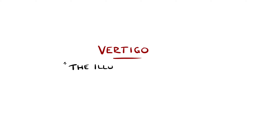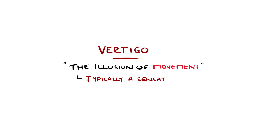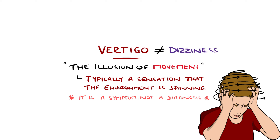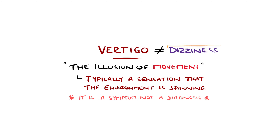Vertigo is defined as the illusion of movement, often described as a sensation that the environment is spinning or of being on a boat. There are several different causes of vertigo which we'll go through, including a way to easily remember them. It's also important to remember that vertigo is a symptom and not a diagnosis in itself. It is closely resembled by dizziness, often being used interchangeably, especially by patients.